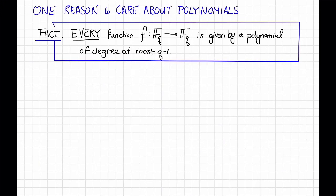Okay, so we've just seen a bunch of useful facts about polynomials. Why do we care so much about polynomials over finite fields? One reason is this other fact about polynomials, which is that every function F from a finite field f_q to the finite field f_q is given by some polynomial, some polynomial of degree at most q-1.